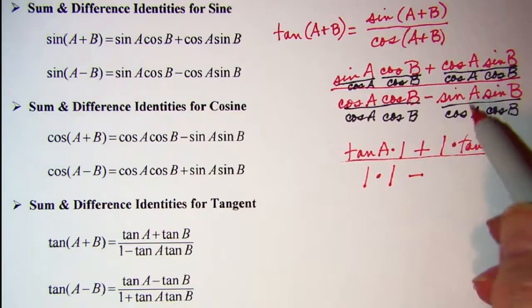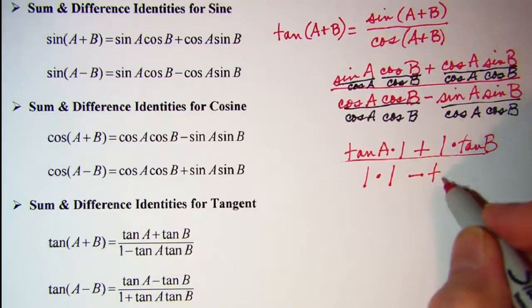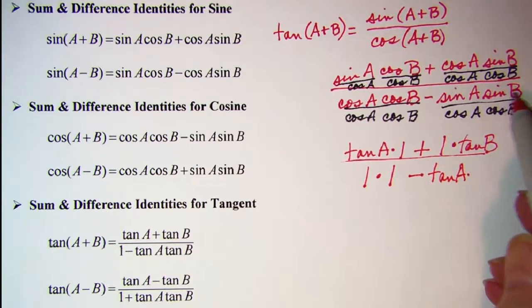And then minus, and then sine A over cosine A, that's tangent A. Times, sine B over cosine B, that's tangent B.